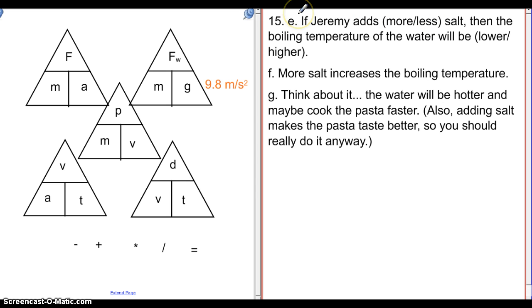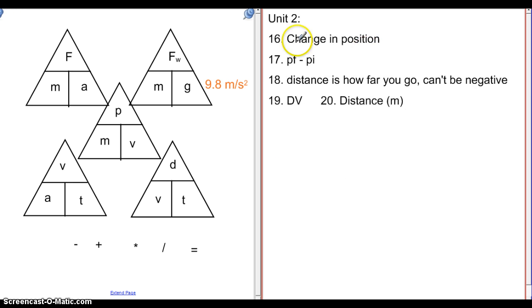For your hypothesis in question number 15, you needed to come up with the independent variable and the dependent variable first. Those were the two things that you need to have. And then you build your hypothesis around that. So you do if Jeremy adds more or less of the independent variable, then the dependent variable will be lower or higher. So that's the way that your hypothesis needs to be set up. It's if prediction, independent variable, then prediction, dependent variable. You can actually switch that and have the prediction first. But the independent variable needs to come after the if and the dependent variable needs to come after the then, which means you do need to identify those before you write your hypothesis. What we saw from the graph is that more salt increases the boiling temperature. And that makes the water hotter. Maybe it will cook the pasta faster. It also makes your pasta taste better. So if you haven't been salting your pasta water, I would recommend starting to do that now.